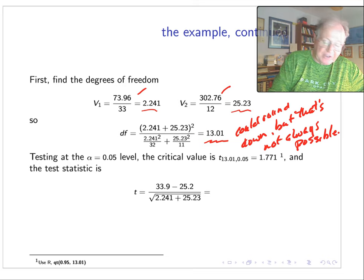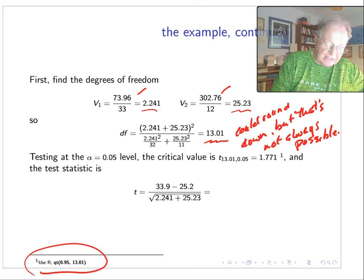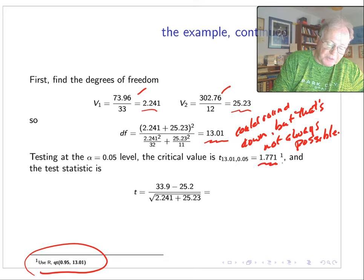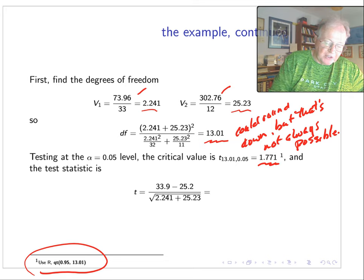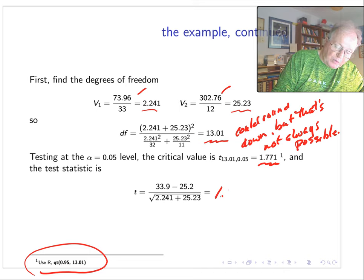Now it turns out that most software like Excel or R will let us actually calculate this for oddball degrees of freedom. So for instance, in R I can use the qt command and get this exact critical value, which is 1.771. So here's my test statistic: I'll take the difference of the means, I'll divide it by the square root of the sum of the variance components, and when I do that I get 1.66, which says, 'Ooh, this is less than the critical value.'